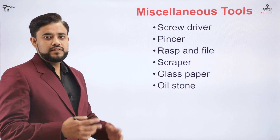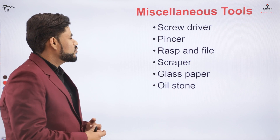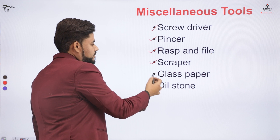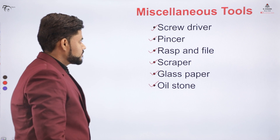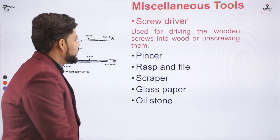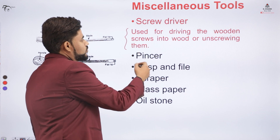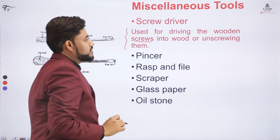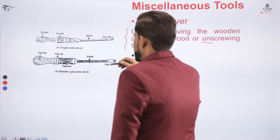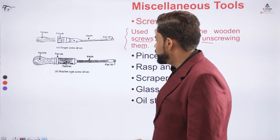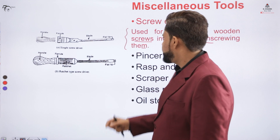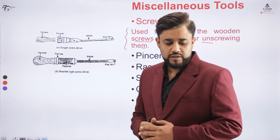The last category is the miscellaneous tools. In the miscellaneous tools category you have other items in the carpenter's toolbox: a screwdriver, a pincer, a rasp and a file, a scrapper, glass paper, and an oil stone. Coming to the screwdriver — the screwdriver is a tool used to drive screws into the wooden surface or to unscrew them from the wooden surface.